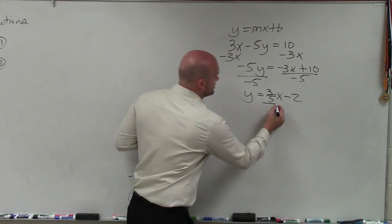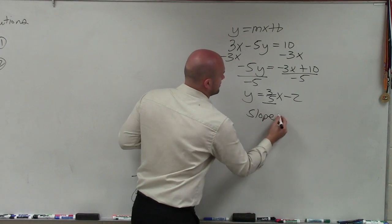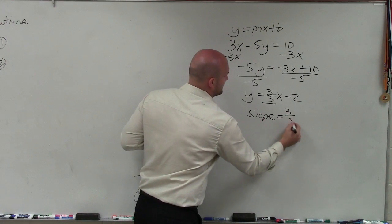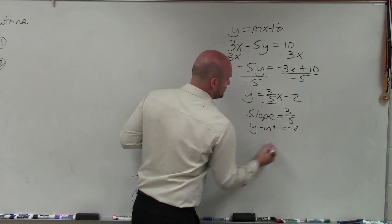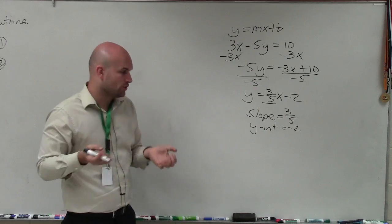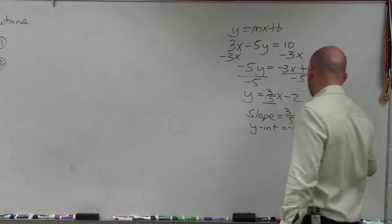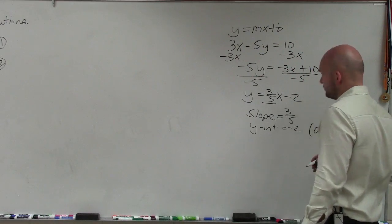Now, I can identify that my slope, which is m, is going to be 3 fifths, and my y-intercept is equal to negative 2. Now, remember the y-intercept is a coordinate point, where the x value is 0, and the y value is the value of your intercept.